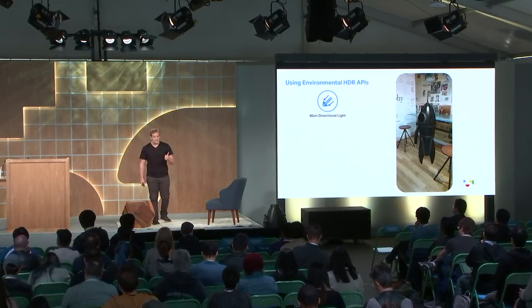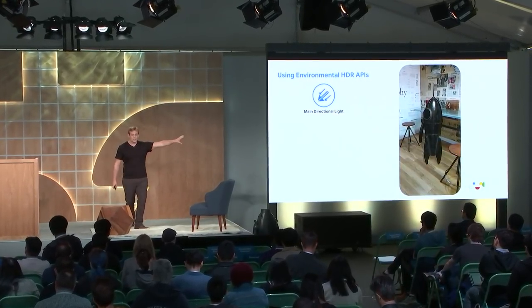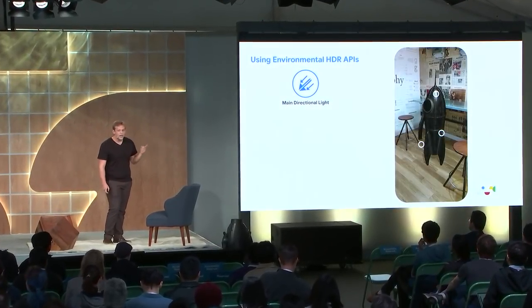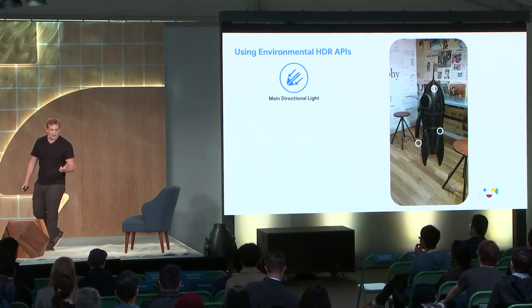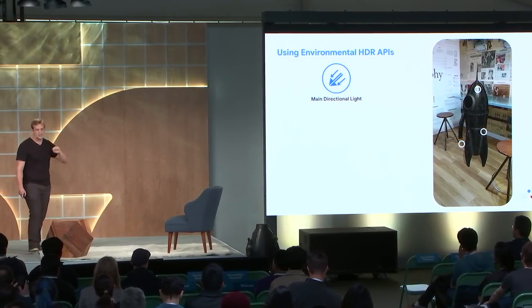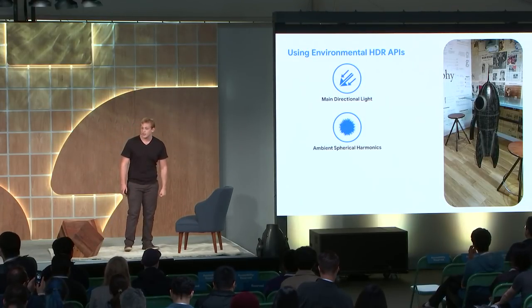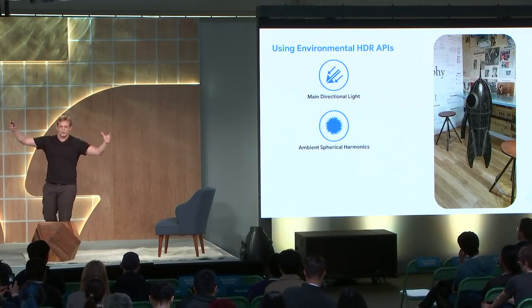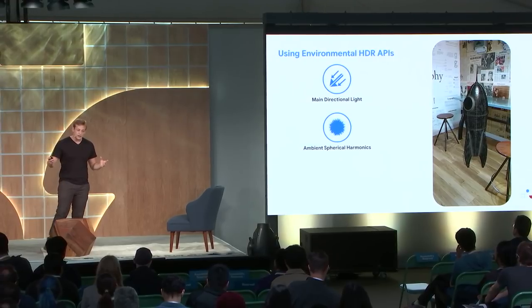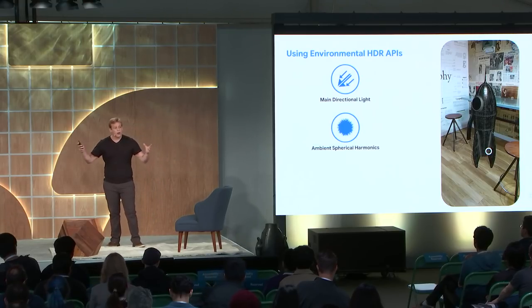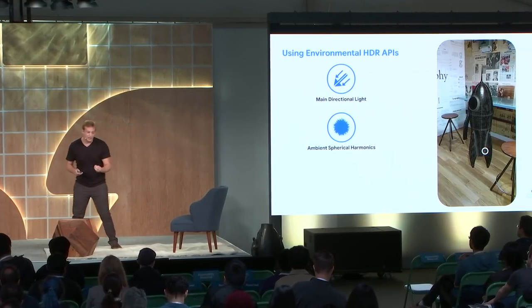Let's peel back some of the layers of what these APIs are actually doing. The first thing we're giving you is a main directional light. Here we're lighting the rocket using just this directional light — you can see we now have a directional shadow on the back end of the rocket that matches the environment, and we're getting some specular highlights because we have a realistic light coming from a particular point of view rather than straight down. The next piece is ambient spherical harmonics, which gives you a sense of the overall intensity of light coming in from all around the environment. Once added, you can see more shading on the bottom of the rocket, though not all of it yet because it's very shiny.